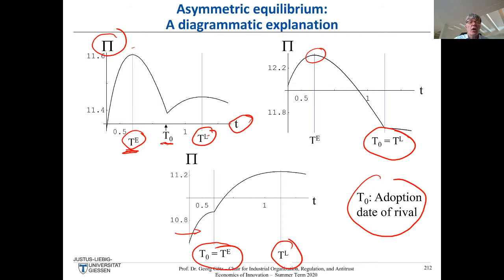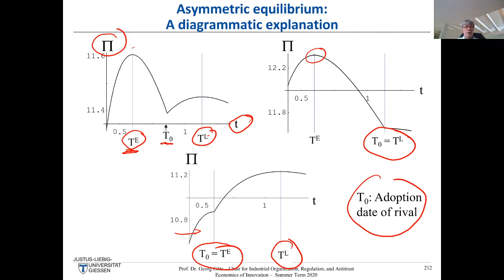Why not just adopt early if your rival adopts early? The problem is adopting early implies very high adoption costs. If one firm already adopted early, your profit gain will be rather low — you don't earn leader profits but both-adopted profits. So if someone else already adopted at the early date, it's not worthwhile to also incur the very high adoption costs; it's better to wait.